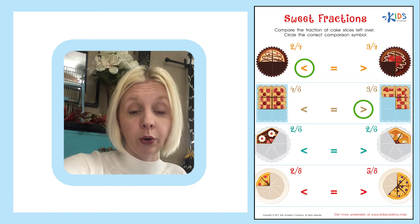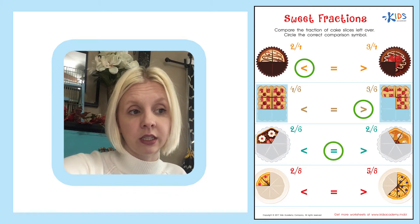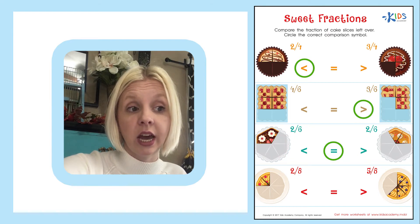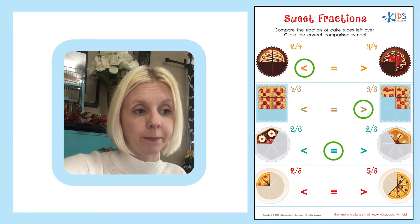So the symbol that represents the same as is the equal sign. Equals means that these are both the same. So we would read this as two-sixths is equal to or the same as two-sixths. They're both the same.